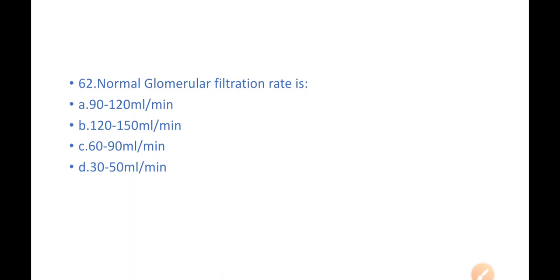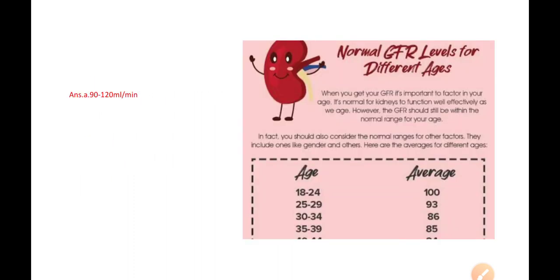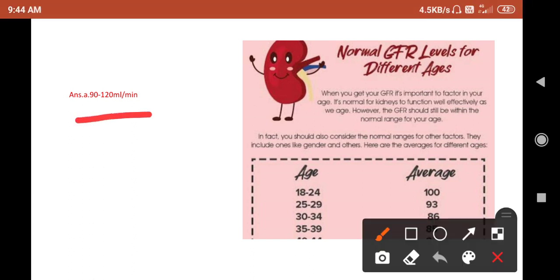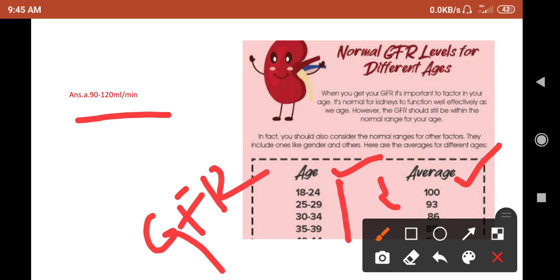You should always consider the adult category range so that you will get into a correct answer. If they ask the normal range, it is the adult range you should tell. Here is the answer: 90 to 120 ml per minute. You can see here the GFR rate changes according to ages, so be careful. You should always answer adult range when they ask you for normal one.